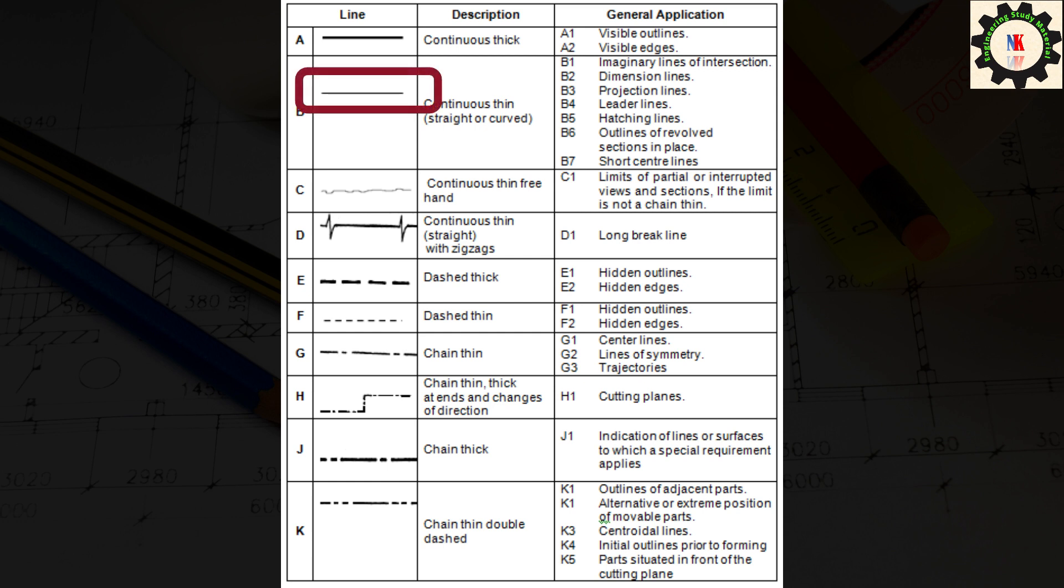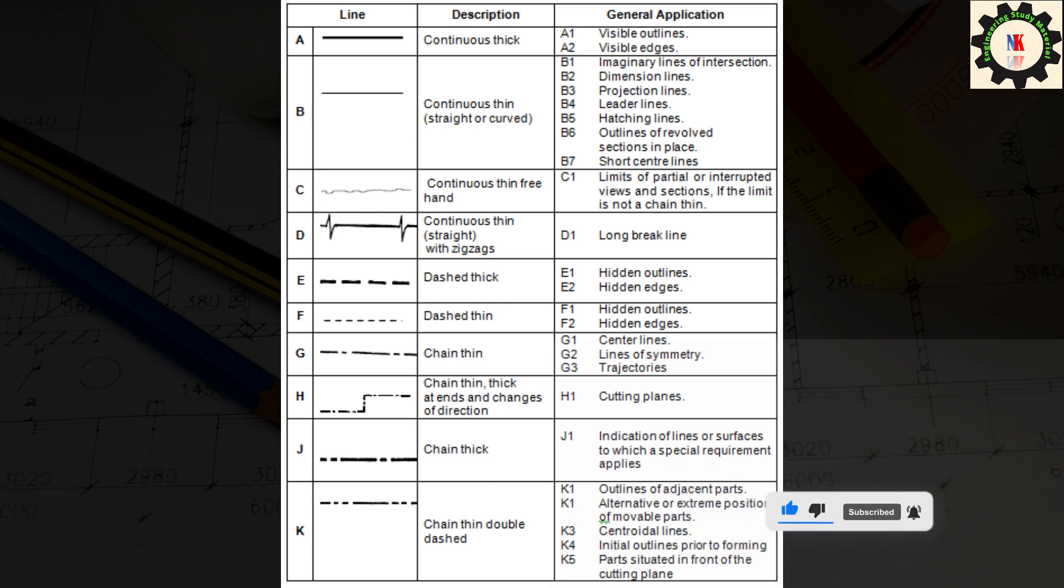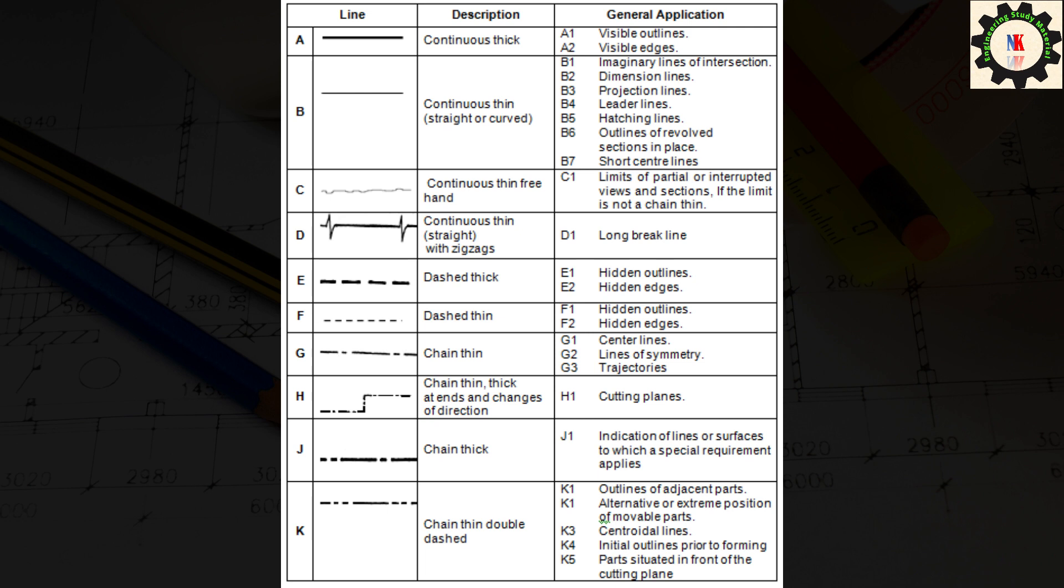A thin continuous line could be a straight or curved line but the main point to remember is it is a tiny, thin line with no dot or dashes. A thin continuous line is used for representing the following: projection lines, hatching lines, construction lines, short center lines, measurement lines, diagonal lines used to state plane surfaces, intersections, leader lines, backside section lines.